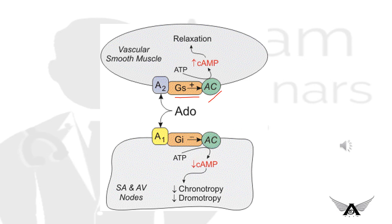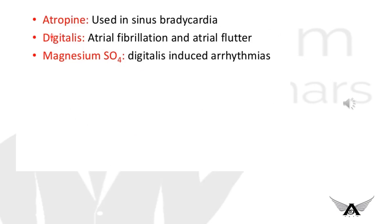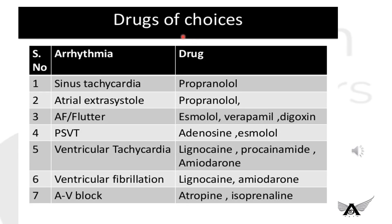Other miscellaneous drugs include atropine, digitalis, and magnesium sulfate. Atropine is used in sinus bradycardia. Digitalis is used in atrial fibrillation and atrial flutter — remember the drug interaction where digitalis cannot be used with verapamil. Magnesium sulfate is used in digitalis-induced arrhythmias. A summary table of drugs of choice for different types of arrhythmias is provided for reference.